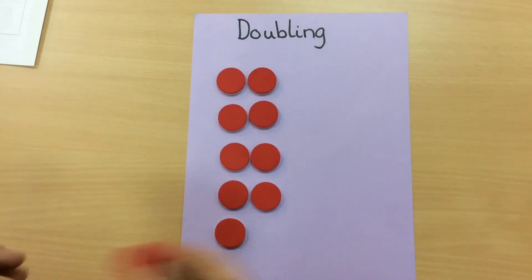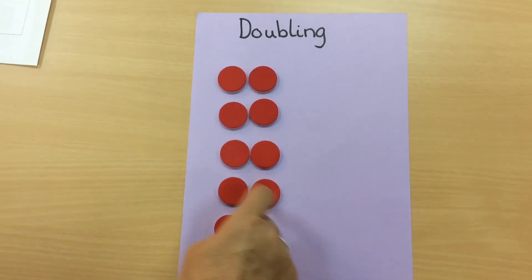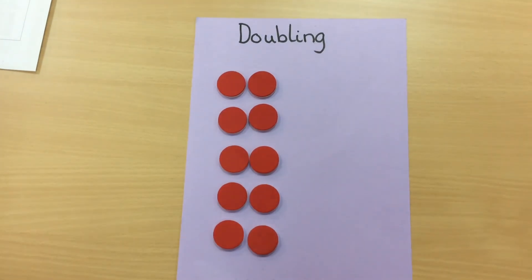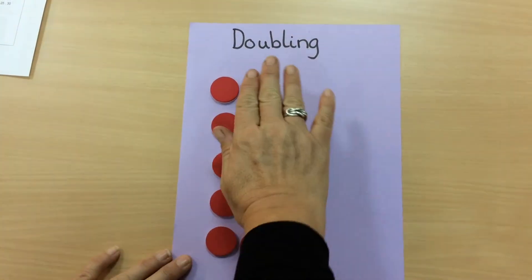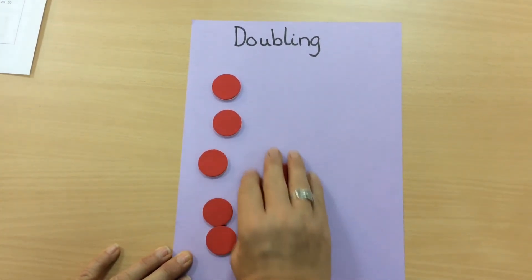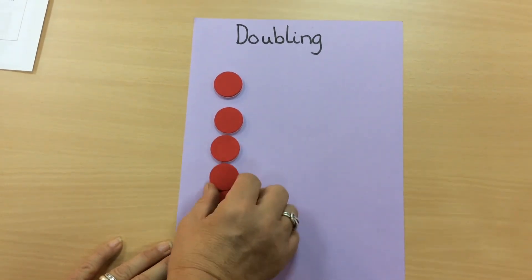So doubling them means that they now have ten, and the inverse, half of ten, is back to five.